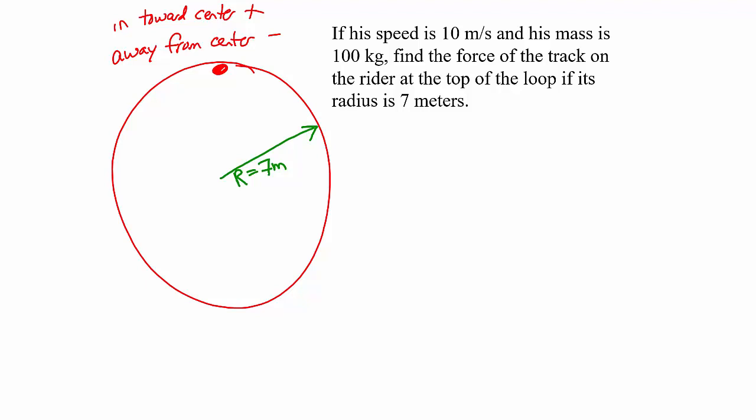In uniform circular motion problems, the acceleration is always directed towards the center of the circle. So we make towards the center of the circle our positive direction. Any force in towards the center of the circle is positive; any force away from the center is negative. At the top of the loop, the force of gravity pulls down on the rider, and the force of the track also pushes down — both are towards the center, so both are positive.